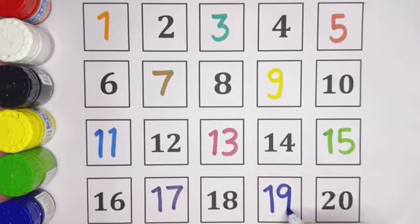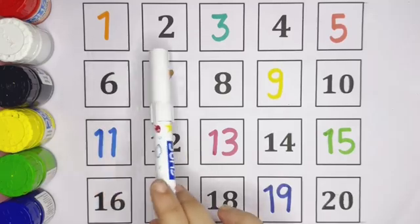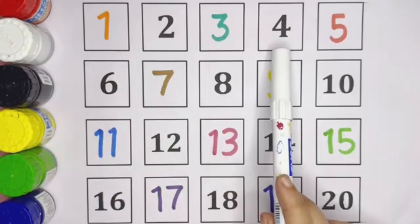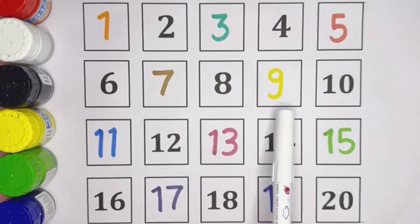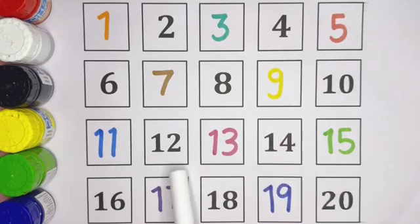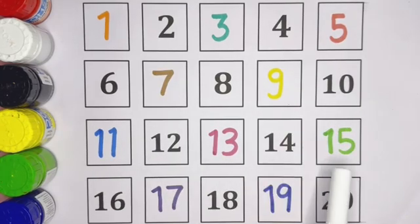Now the numbers are complete, kids. One to twenty: one, two, three, four, five, six, seven, eight, nine, ten, eleven, twelve, thirteen, fourteen, fifteen, sixteen, seventeen, eighteen, nineteen, twenty.